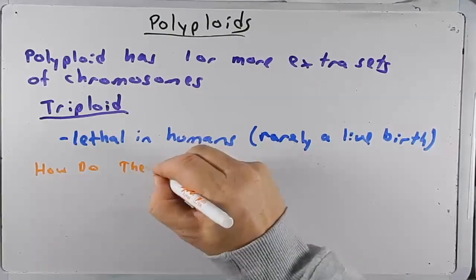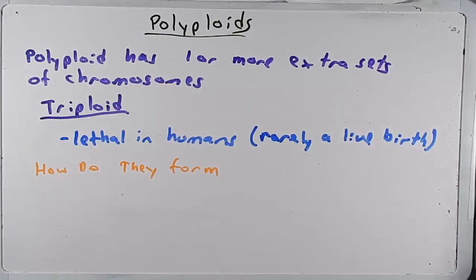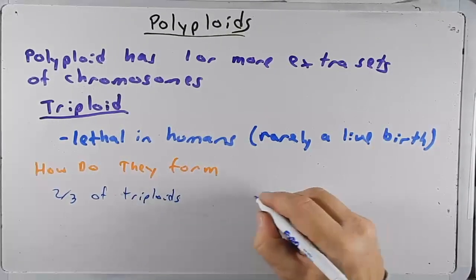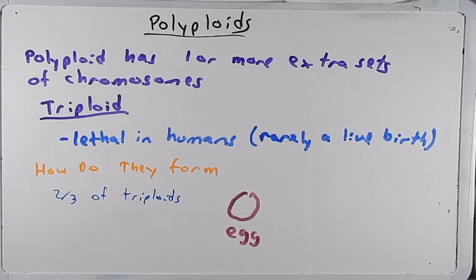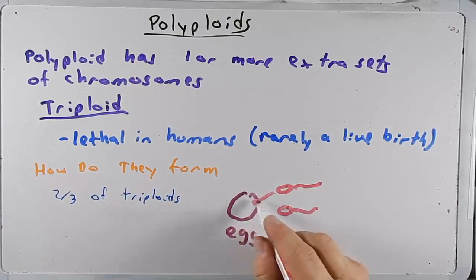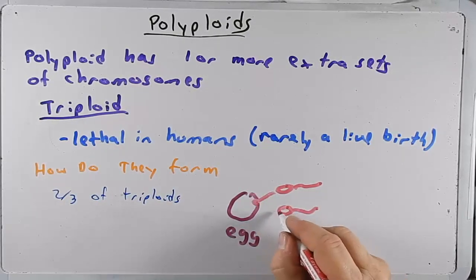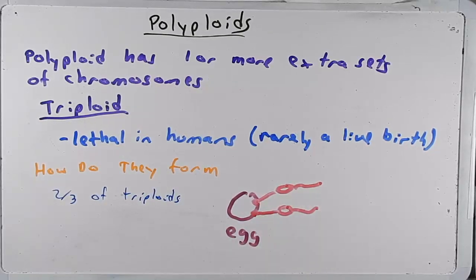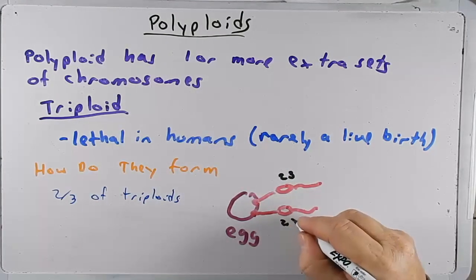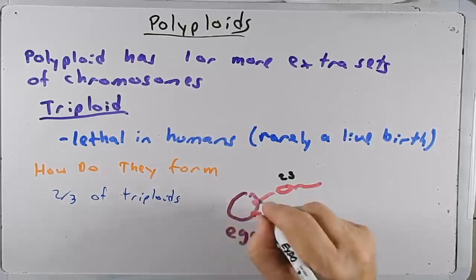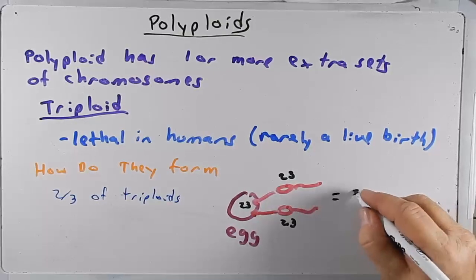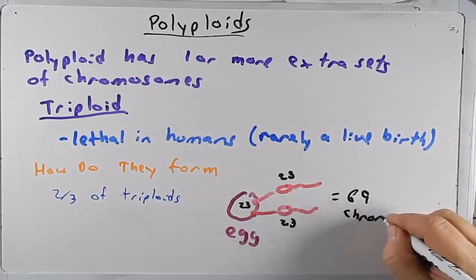How do they form? Most often, probably two-thirds of the time, they form when you have a single egg fertilized by two sperm. Usually when one sperm fertilizes an egg it shuts down the ability for an additional sperm to enter, but rarely two get in. When that happens you have 23 chromosomes from one sperm, 23 from the other, and 23 in the egg, for a total of 69 chromosomes.